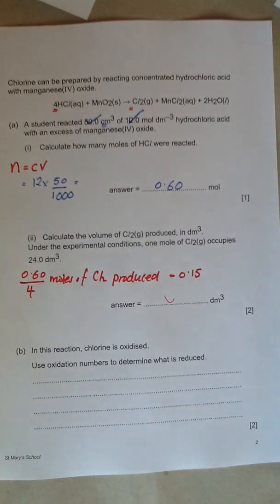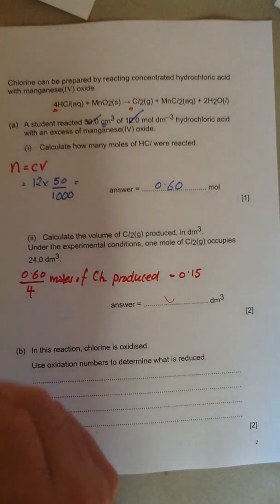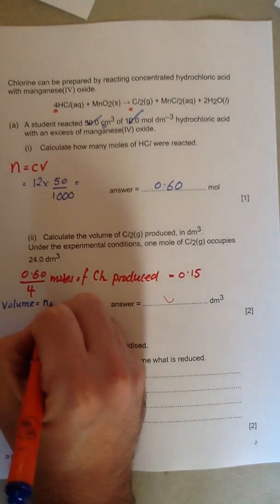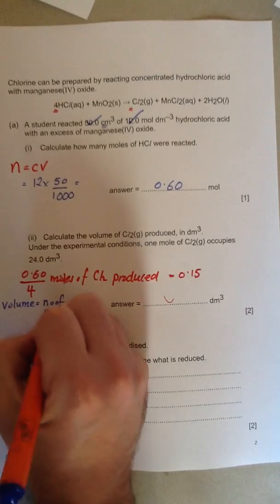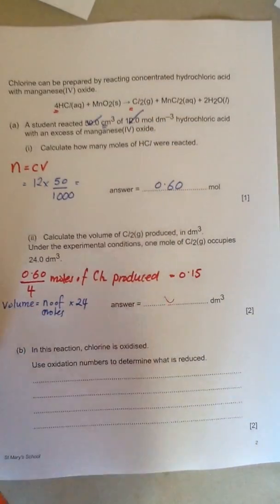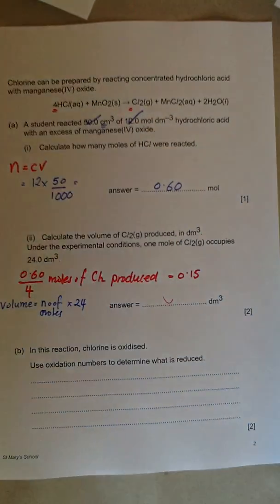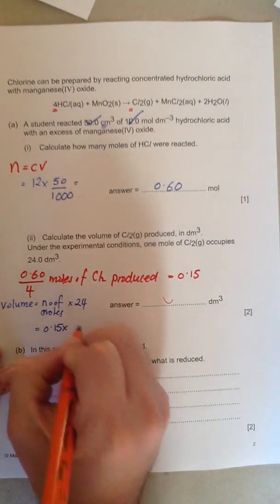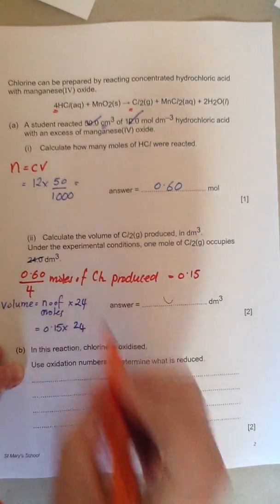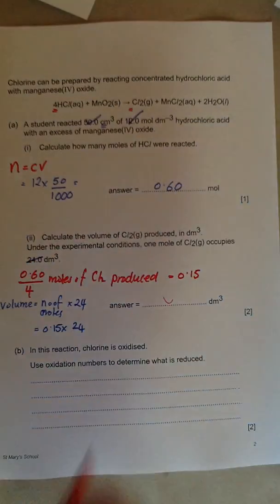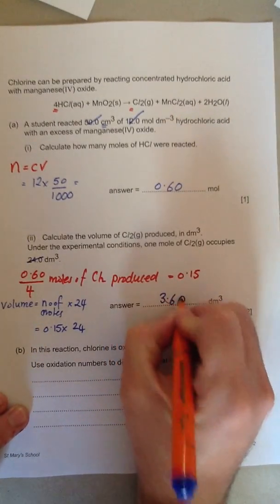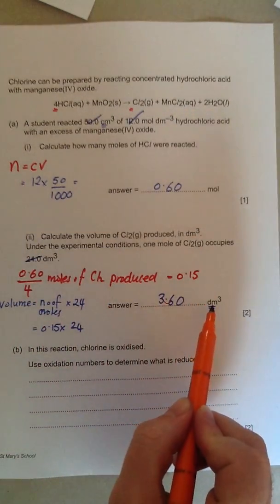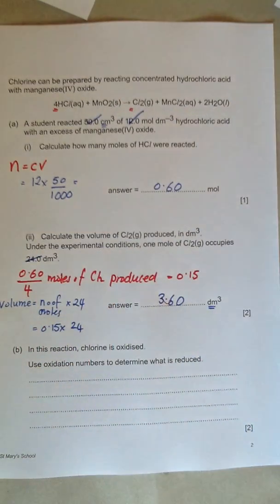Next equation we need to use is the gas equation. The volume of gas is the number of moles times by 24. And the number of moles we have is 0.15. So it's 0.15 times by 24. We know because the number 24 is given to us. So that's 3.60 decimetres cubed. Check your units. If that is in decimetres and that is in centimetres cubed, you need to start looking at converting them.